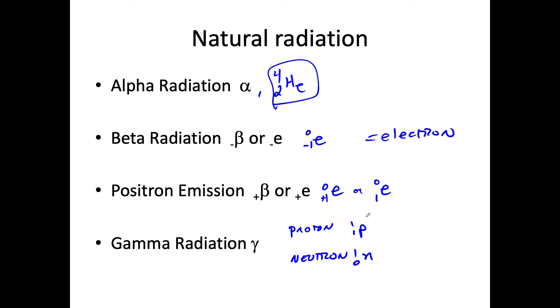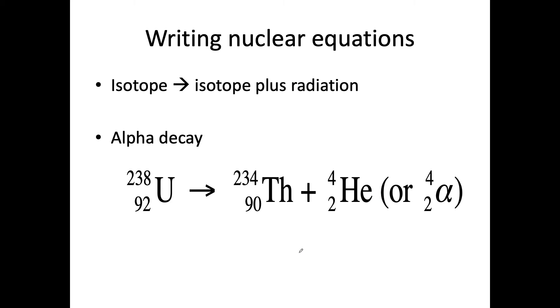So let's go ahead and look at how we write the equations for different types of decays. So write all these down, folks. Give me a minute. Okay, a minute is up. So when we write nuclear equations, especially when we're doing decay, isotope yields another isotope plus the radiation.